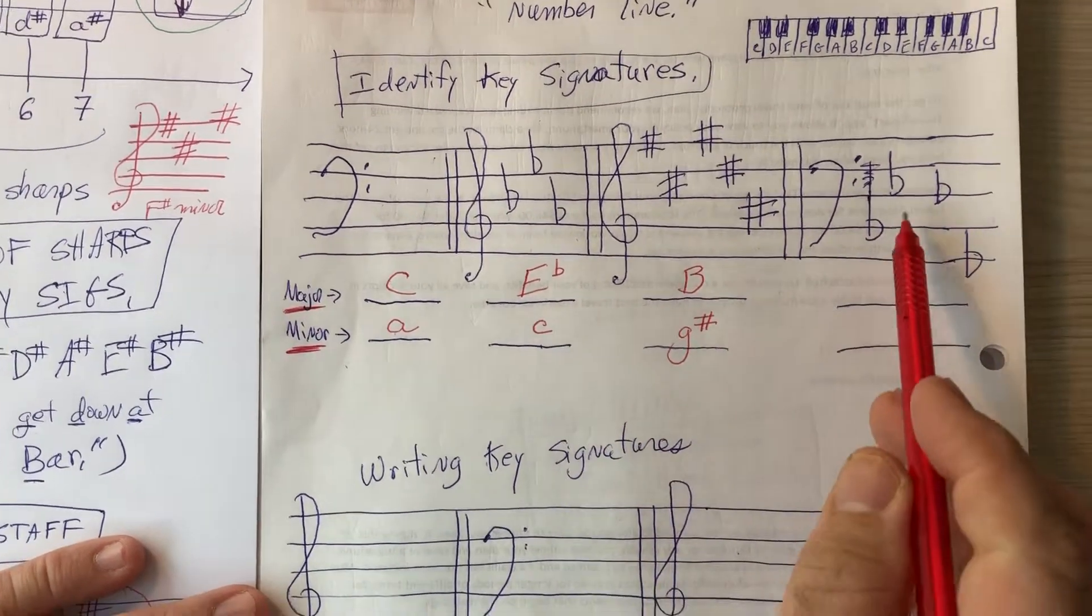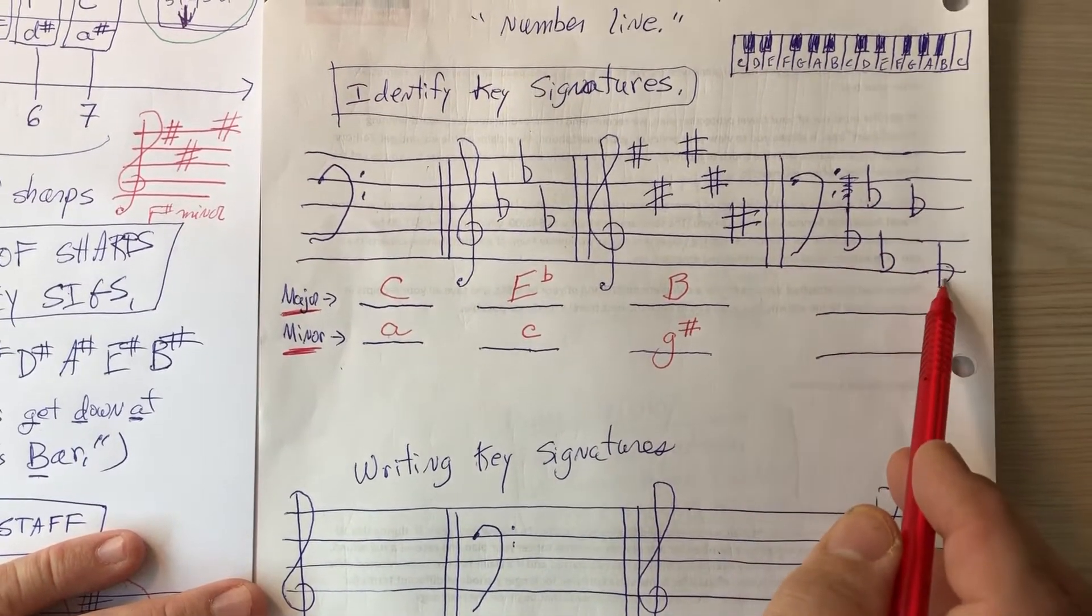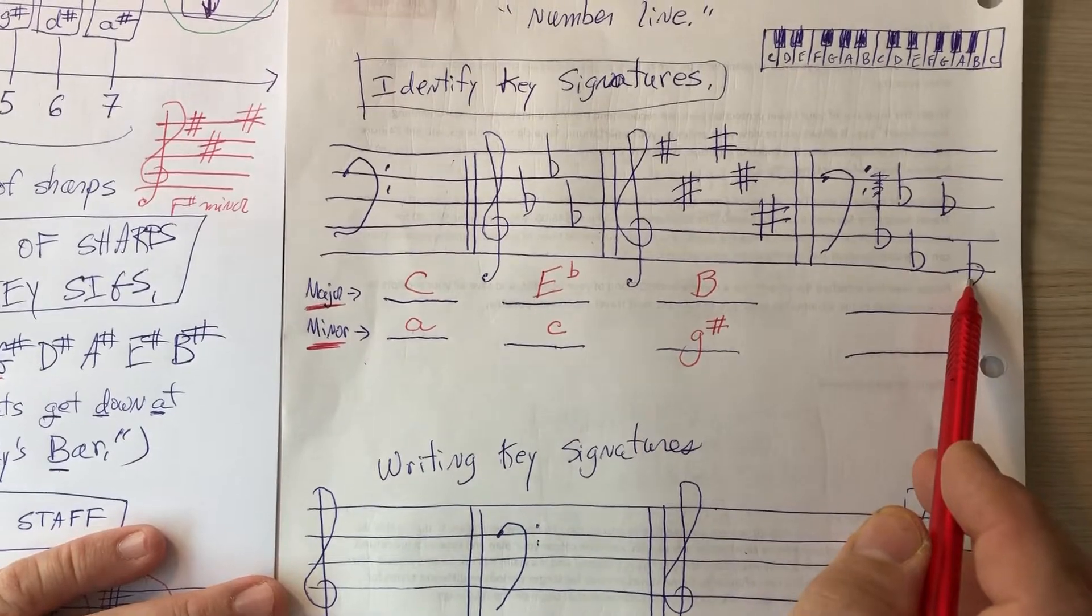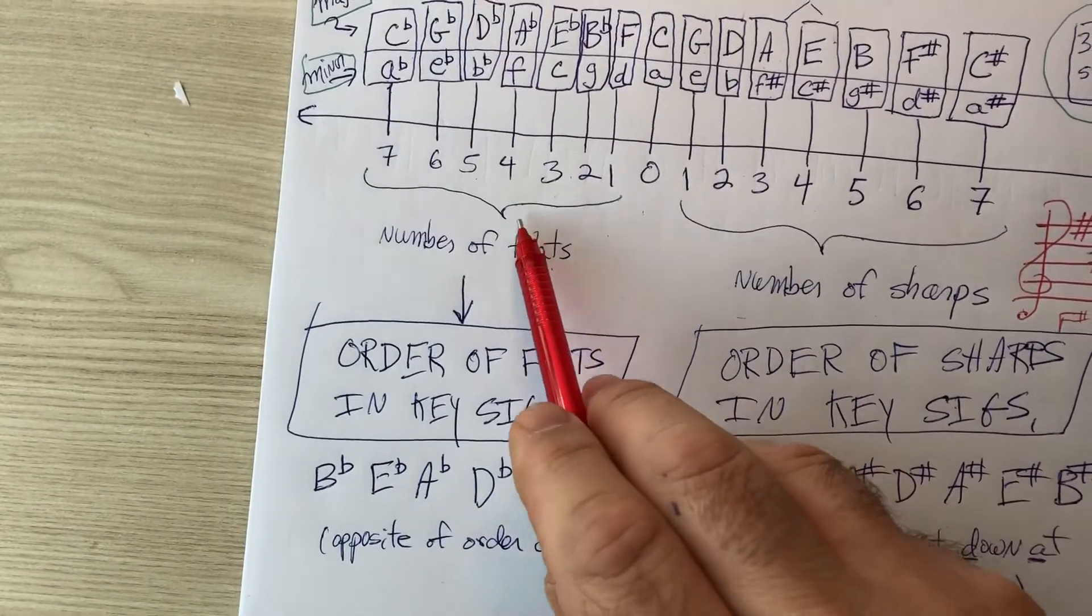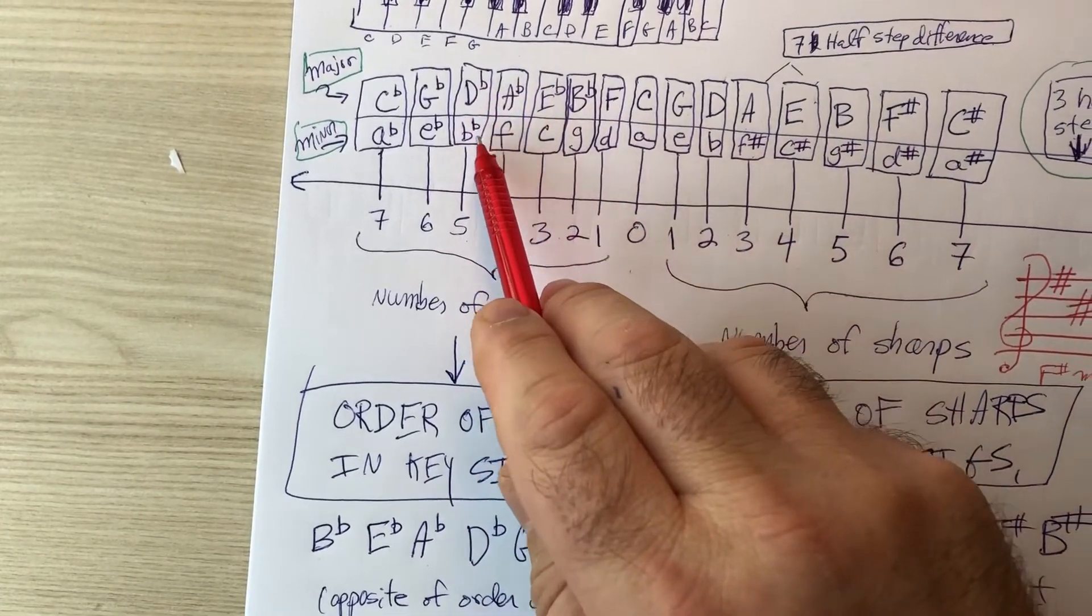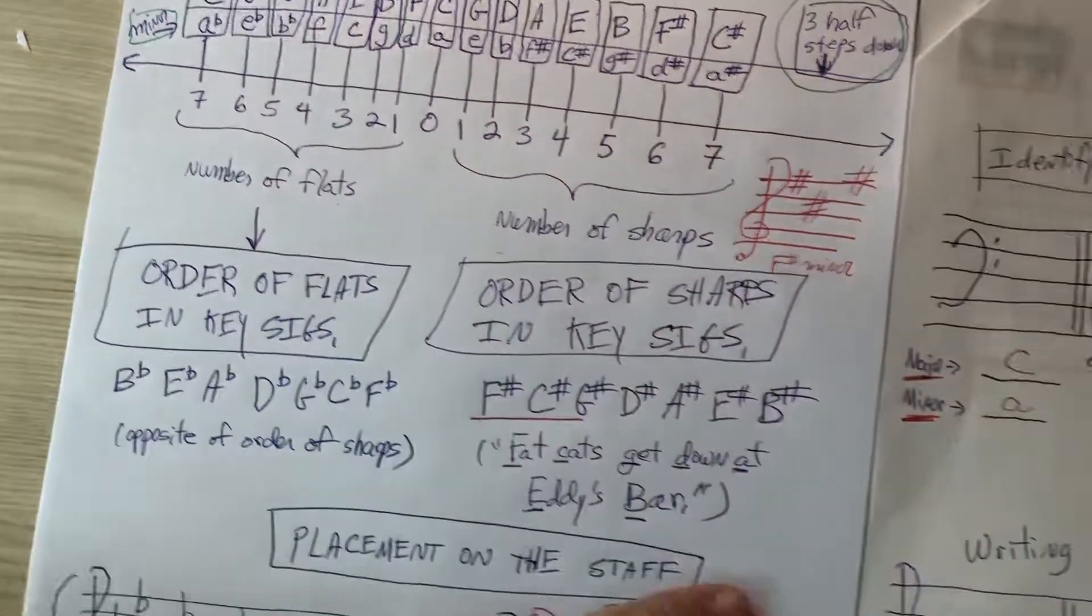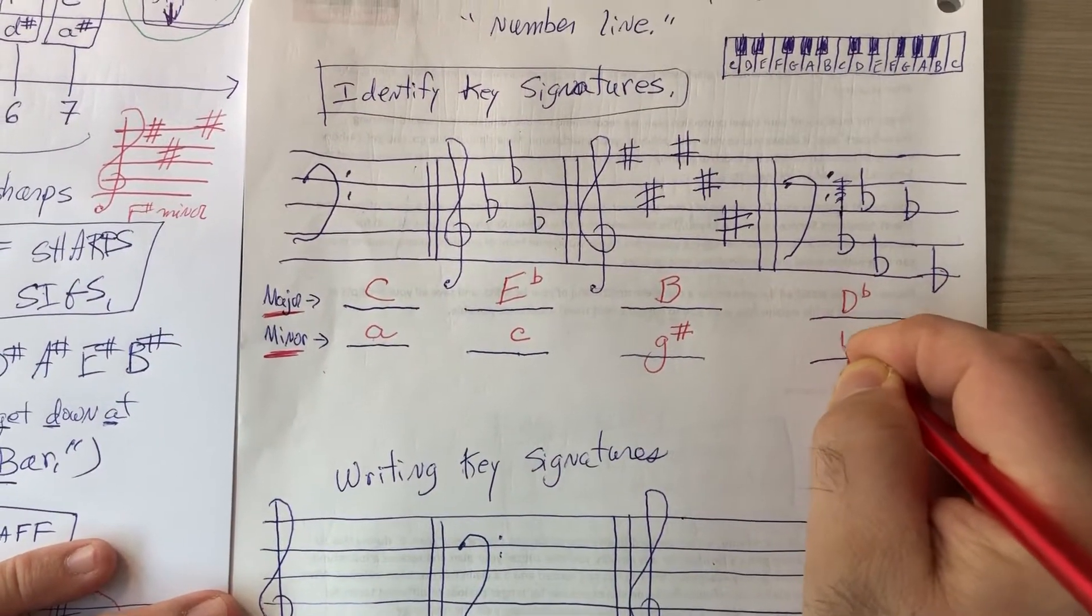And finally, this is just an error on my part, but we have one, two, three, four, five flats. So we go over to the flat side. Here's the flat side. We want five flats. So they could be D flat major or B flat minor. So D flat major or B flat minor.